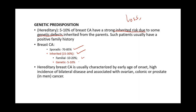Familial breast cancer runs in the family but no specific gene has been isolated as the culprit, while in genetic or hereditary breast cancer, an isolated gene is identified. Hereditary breast cancer is characterized by early age of onset, high incidence of bilateral disease, and association with ovarian, colonic, or prostate cancer in men.